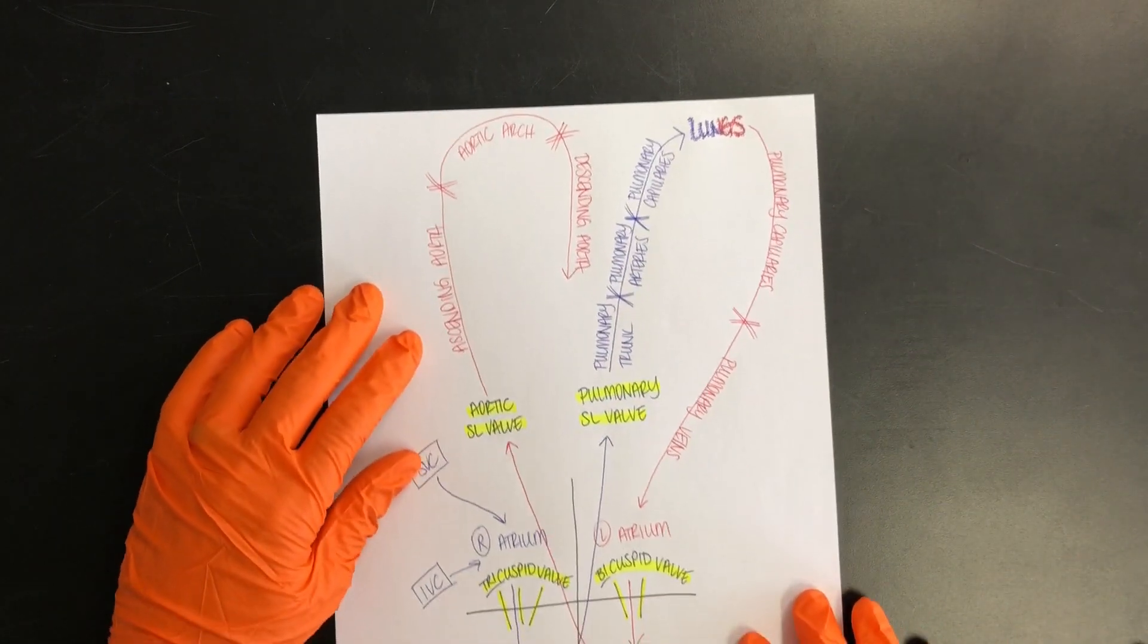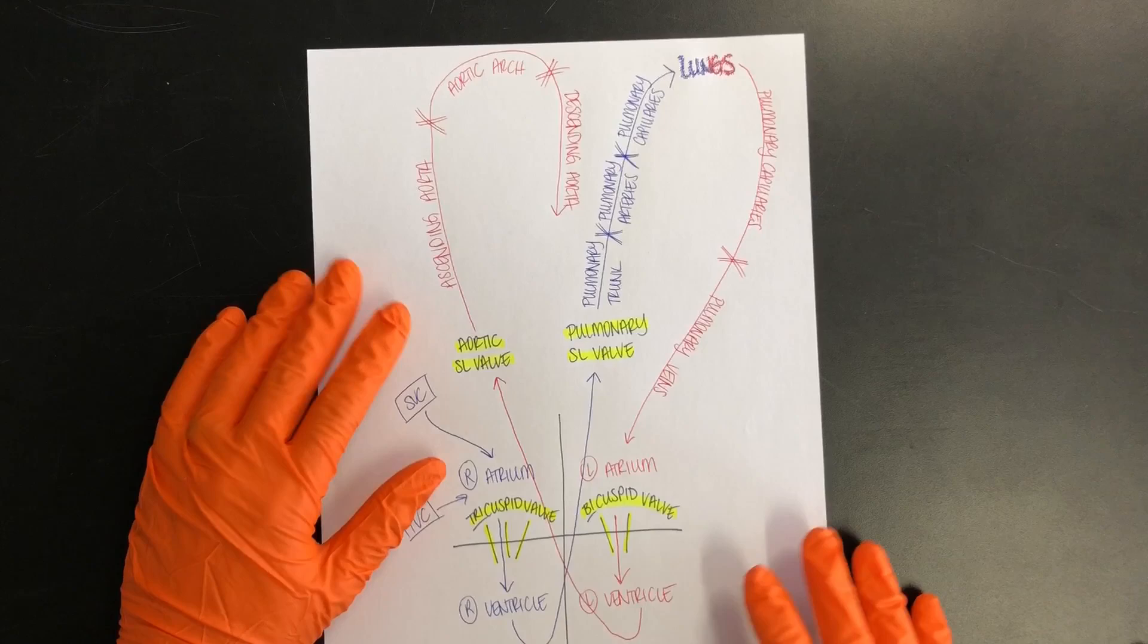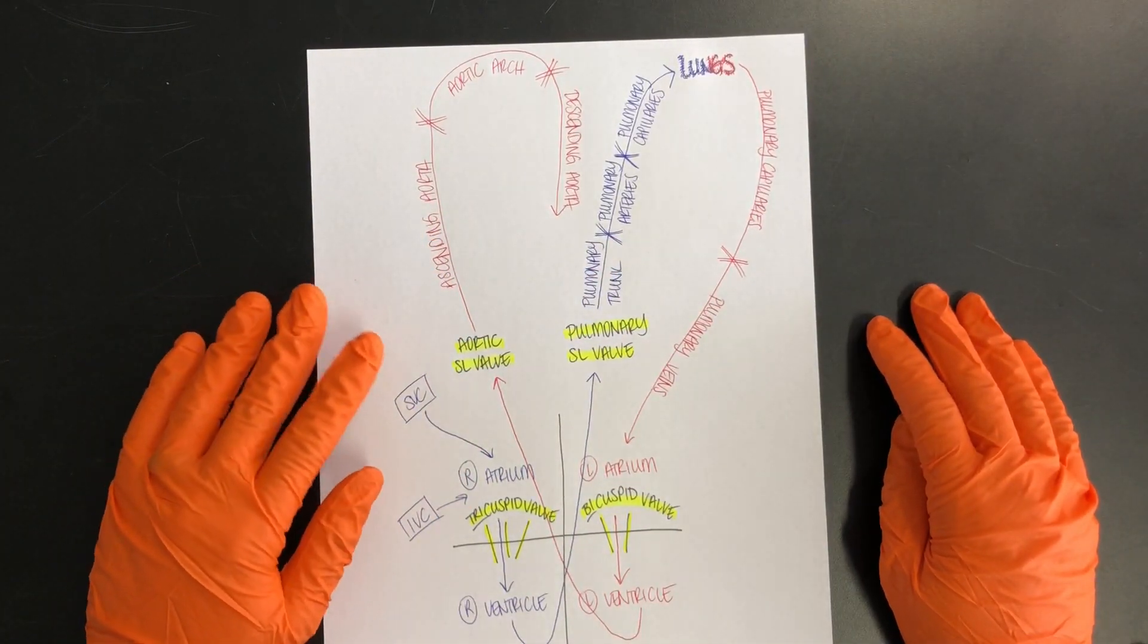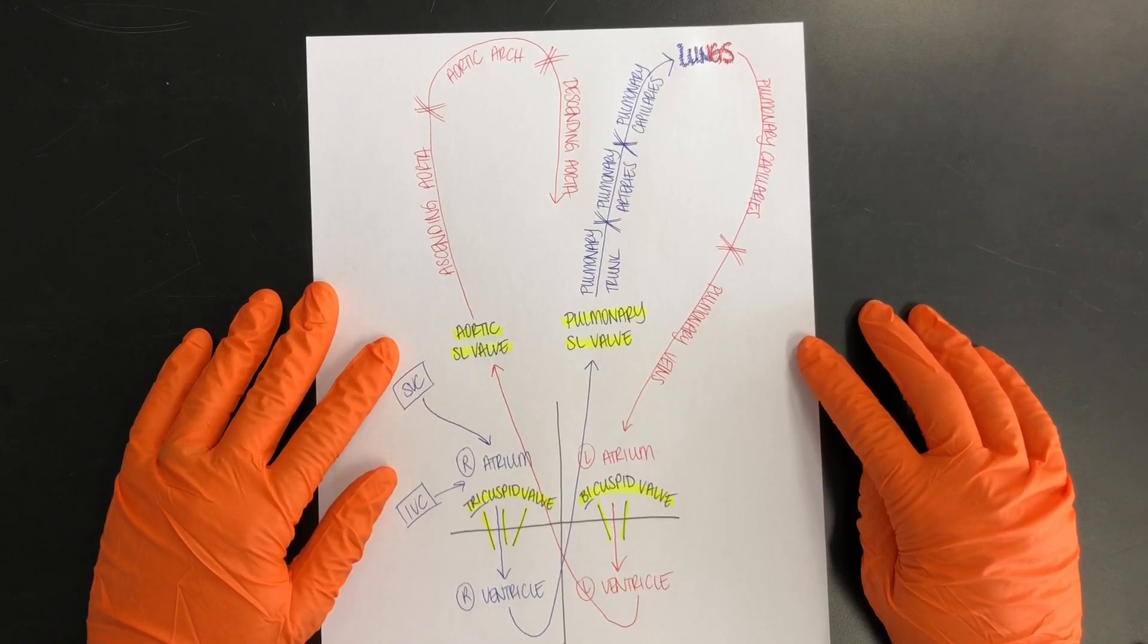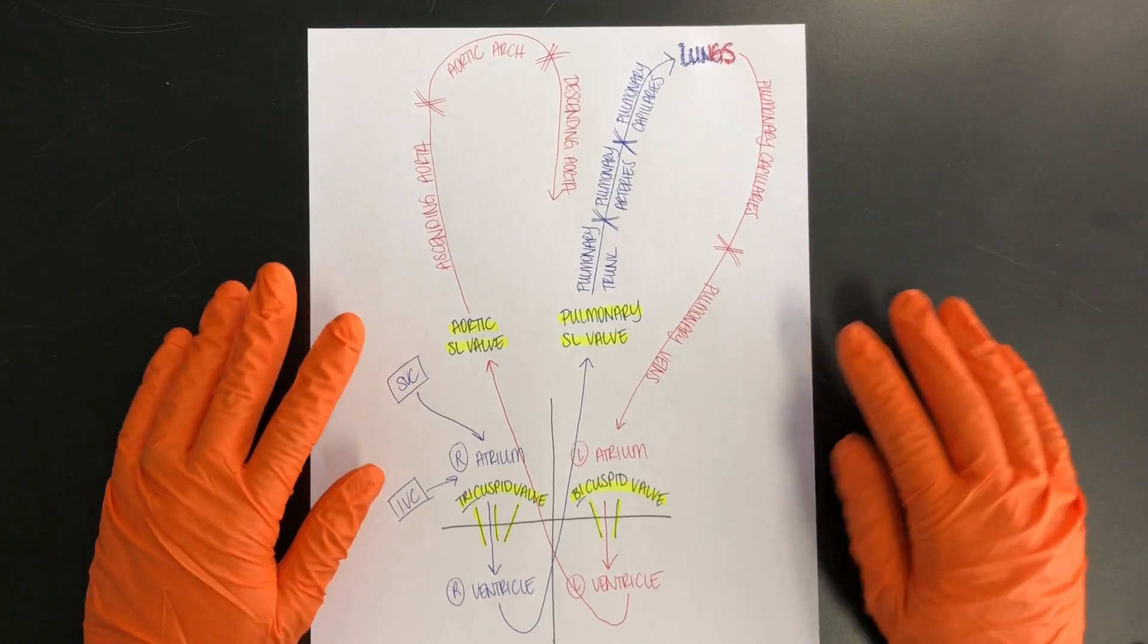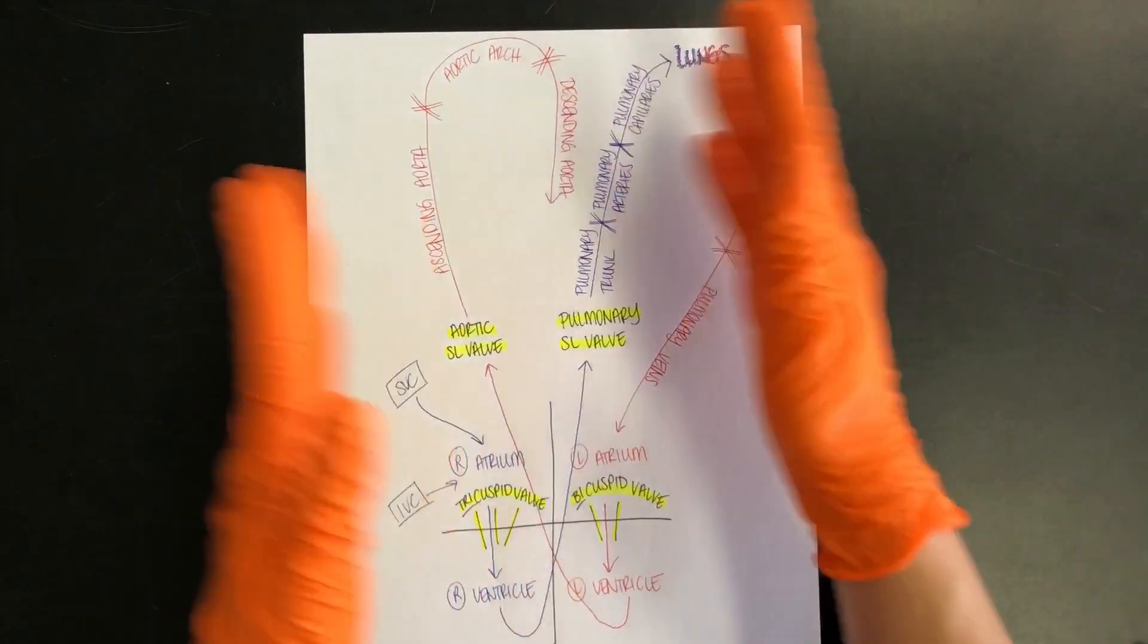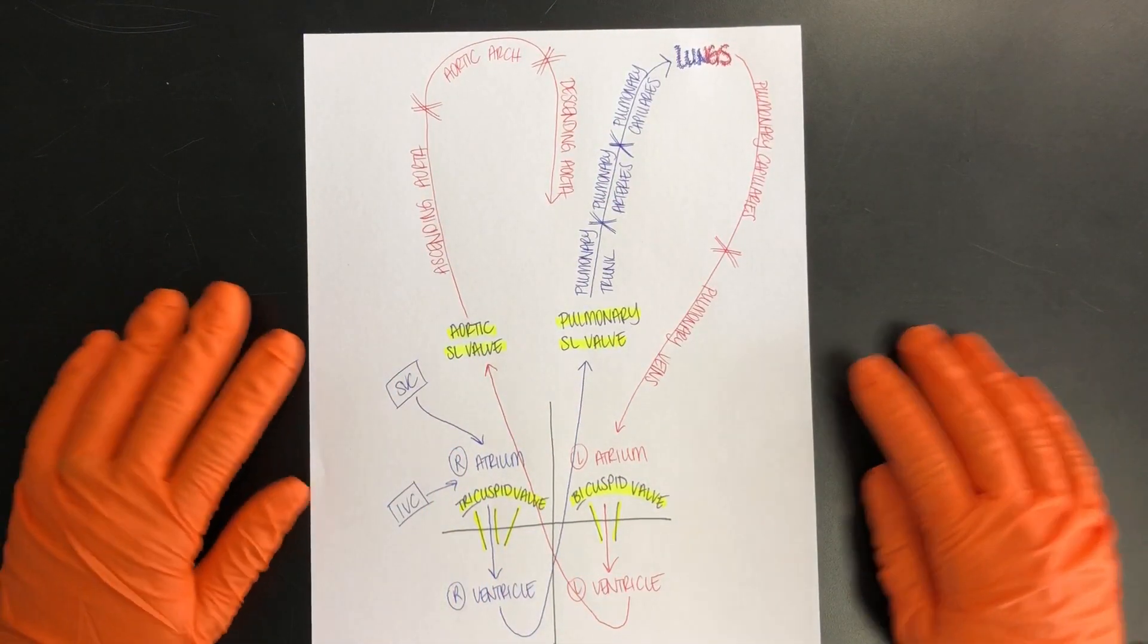And the aorta is going to provide all the branches that end up going to all the different parts of the body. So the aorta is a really important vessel because that oxygenated blood goes through here first and then to other parts of the body.